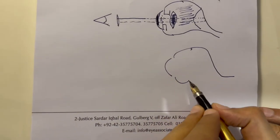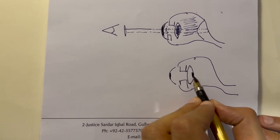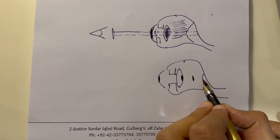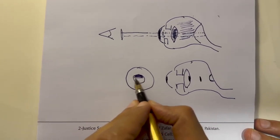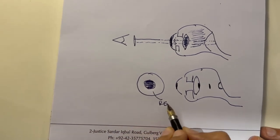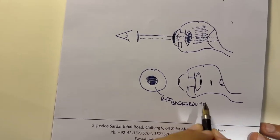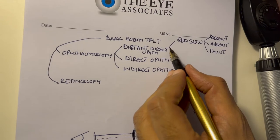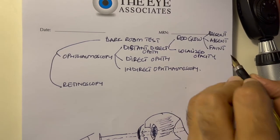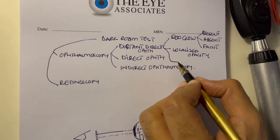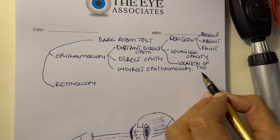Alternatively, if there is a localized opacity in the cornea, the lens, or the vitreous, or there is a localized retinal detachment, what you see is a black opacity against a red background. The second thing — if the red glow is present — is seeing whether any localized opacity is present. The third thing seen through a distant direct ophthalmoscope is determining the location of the opacity.